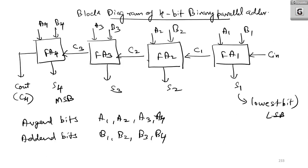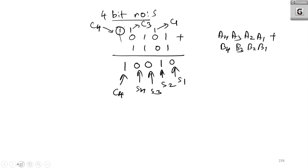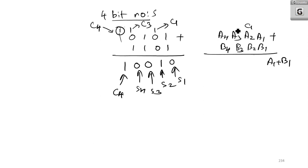So that is the basic operation of this 4-bit binary parallel adder. Here you are doing it bit by bit. If you are adding A1 and B1 and there is a carry, that carry will propagate to the next stage. If there is again carry, it propagates as C2, then C3, and if there is carry, it propagates as C4. So I think you got the logic of the 4-bit binary parallel adder.